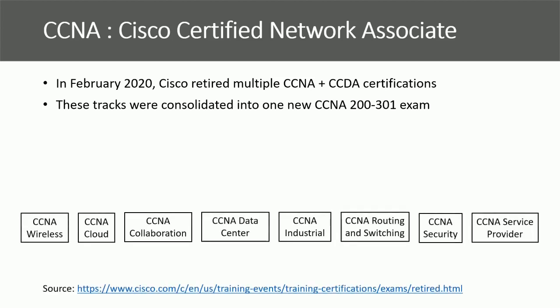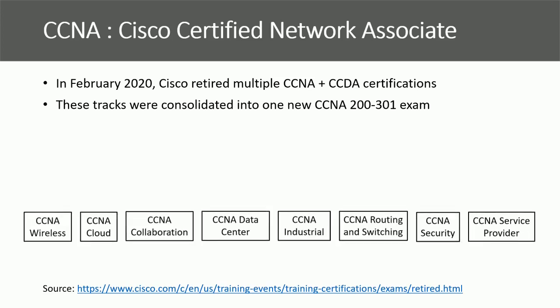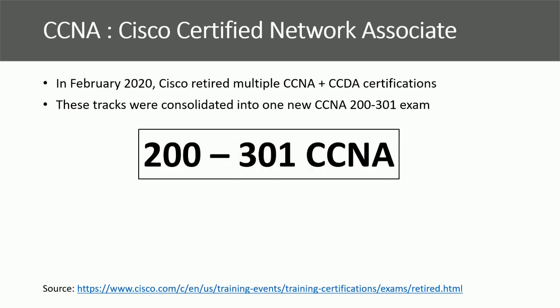Before February 2020, there were CCNA Wireless, CCNA Cloud, CCNA Collaboration, CCNA Data Center, CCNA Industrial, CCNA Routing and Switching, CCNA Security, and CCNA Service Provider. All these tracks, in addition to CCDA, were consolidated into one certificate, which is Cisco CCNA 200-301 certification.